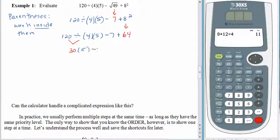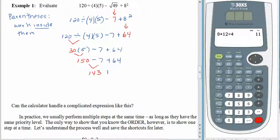Recopy the rest of the problem. Multiplication is done before addition and subtraction — 30 times 5 is 150. Recopy the rest of the problem. Now we are down to the lowest priority level: addition and subtraction. Which one gets done first? The one on the left. 150 minus 7 is 143. It's hard to keep yourself doing only one thing per line, but finally 143 plus 64. 3 plus 4 is 7, 6 plus 4 is 10, carry the 1 — 207.